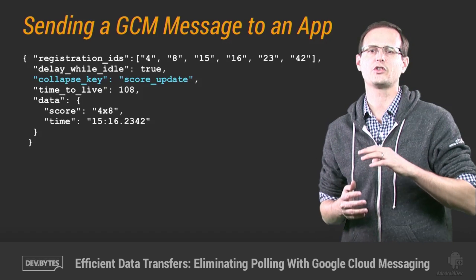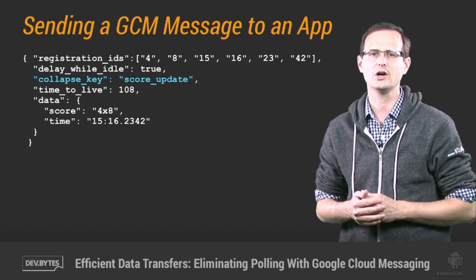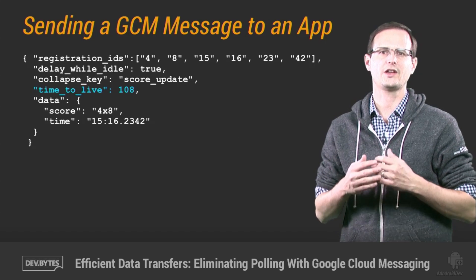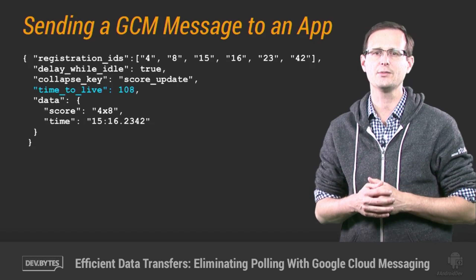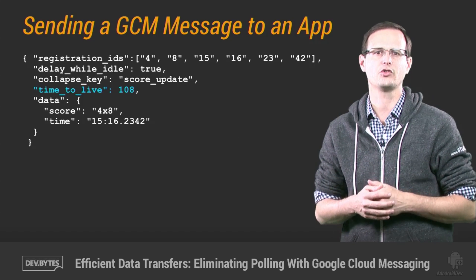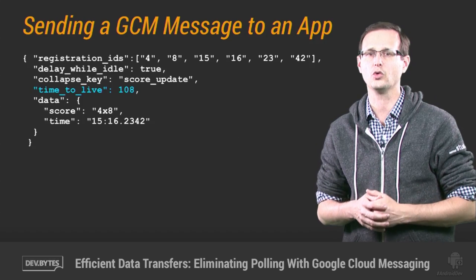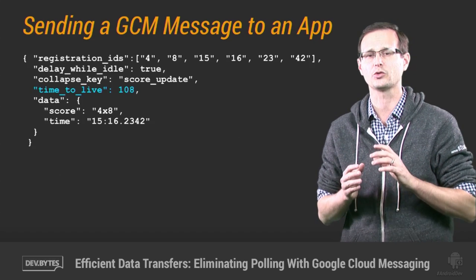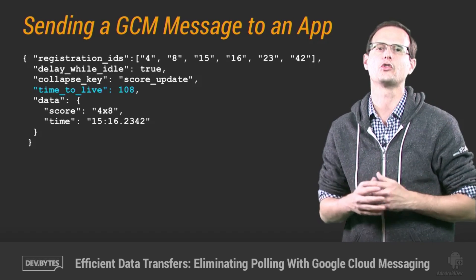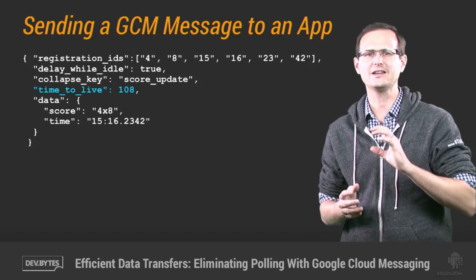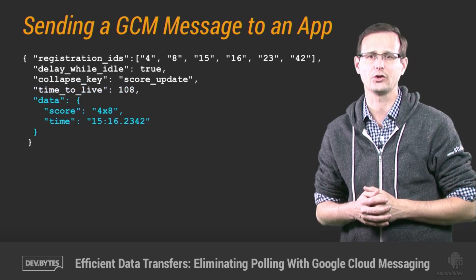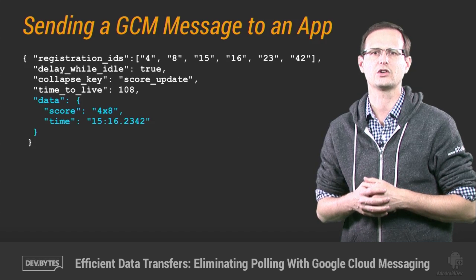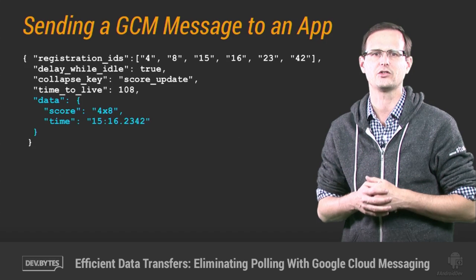You can go a step further and set a time limit before queued messages expire using the time_to_live parameter. This determines how many seconds the GCM servers should keep a message before cancelling it. By default, this is set to four weeks, but you can dramatically reduce this for messages you know will be out of date or replaced over a shorter time period, which is a particularly useful feature for messages with payload data included in the form of an optional JSON object whose fields represent key-value pairs of data.